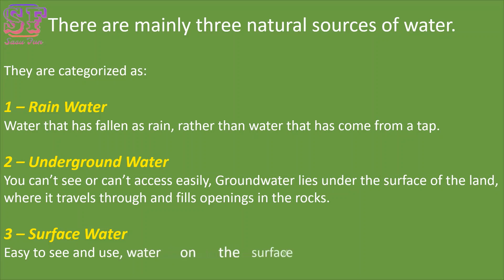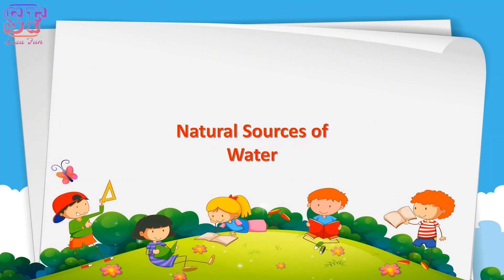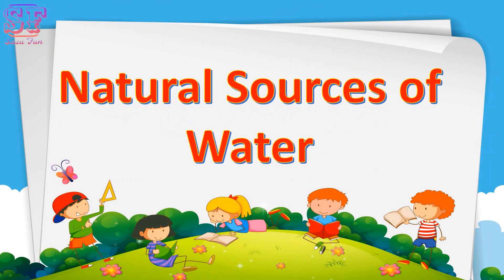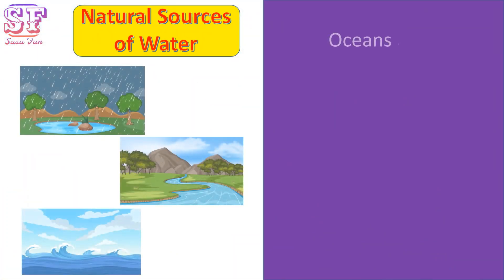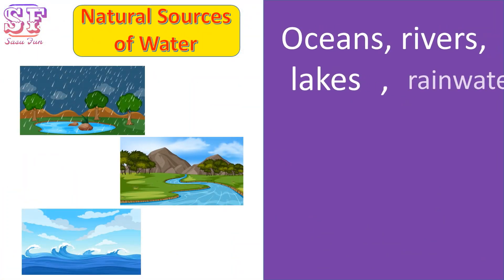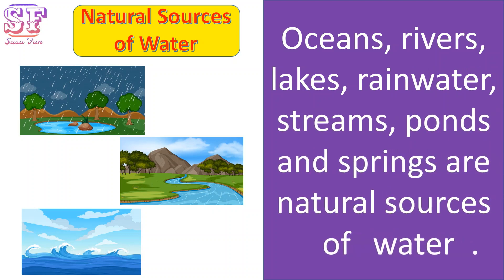Water on the surface of the earth, like oceans, rivers, lakes, ponds, and streams, is called surface water. Oceans, rivers, lakes, rainwater, streams, ponds, and springs are natural sources of water.